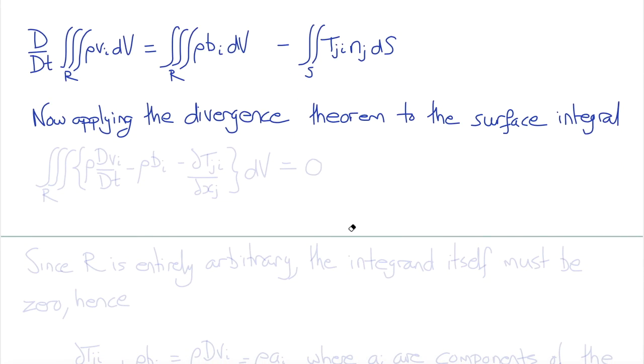This will yield three volume integrals that we can collect together as a triple integral over R of rho dV_i/dt, that's the inertial force term, minus rho B_i, minus del T_ji/del x_j. So this is the divergence of the stress tensor integrated with respect to volume, equal to zero.